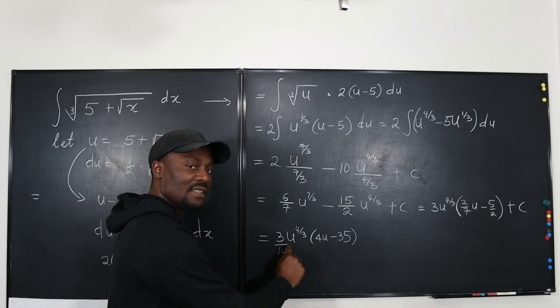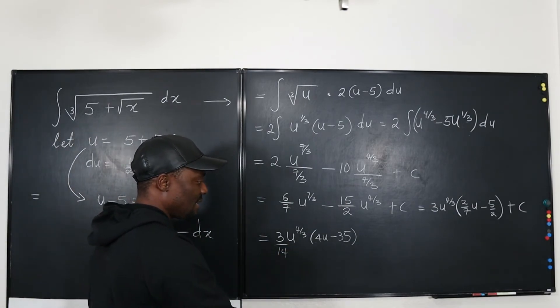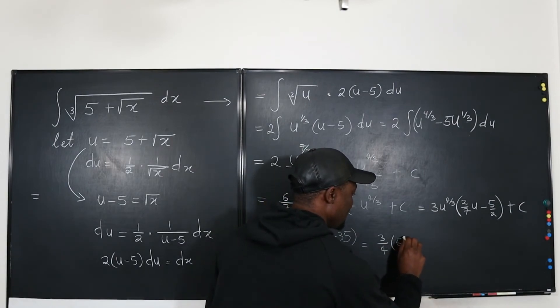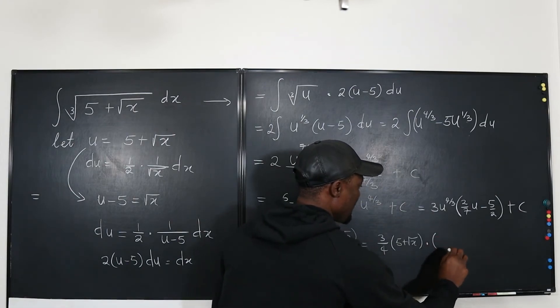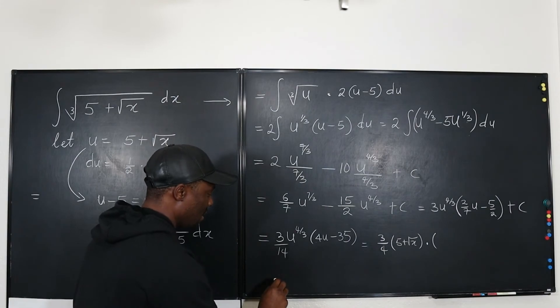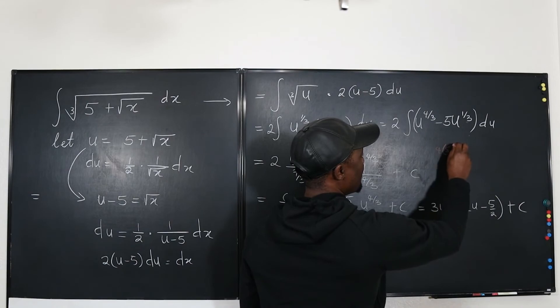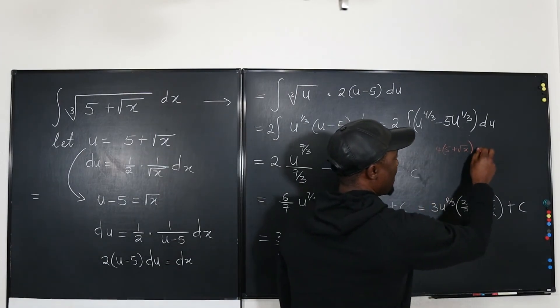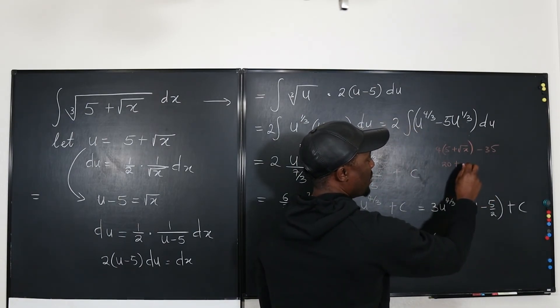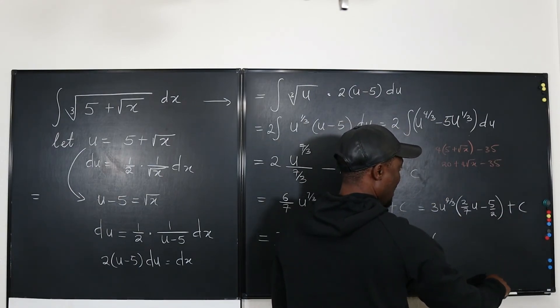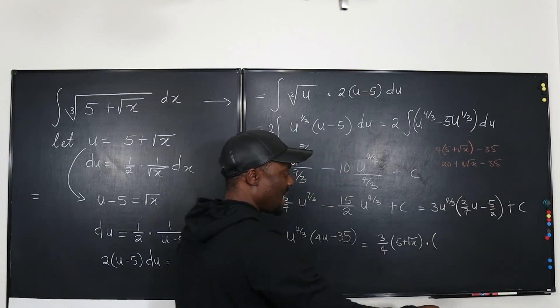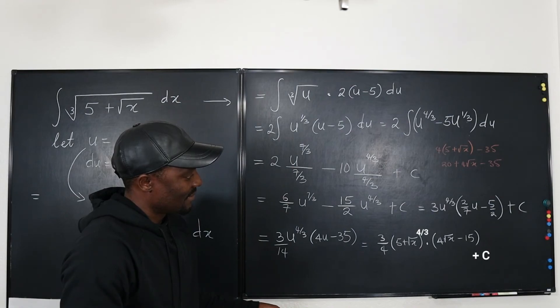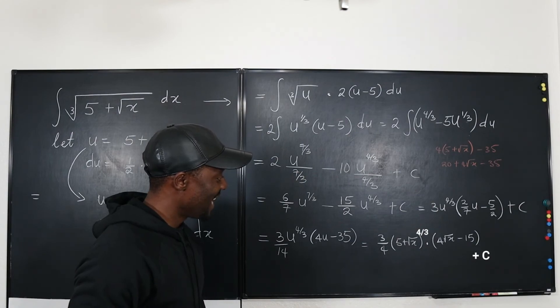And finally remember we cannot leave the u like this. We have to replace it with what we have here. Now if you replace this your answer is going to be 3 over 14 times - this is going to be 5 plus square root of x multiplied by - I don't want to write this answer straight because I know when I write - watch this. Let's do it here. 4 times 5 plus square root of x. That's your 4u. 4u minus 35. It's going to end up as 20 plus 4 square root of x minus 35. So we're going to have 4 times square root of x - 20 minus 35 is minus 15. So it's going to be 4 root x minus 15. That's it. It's even cleaner than I thought it was going to be. And that's my answer.